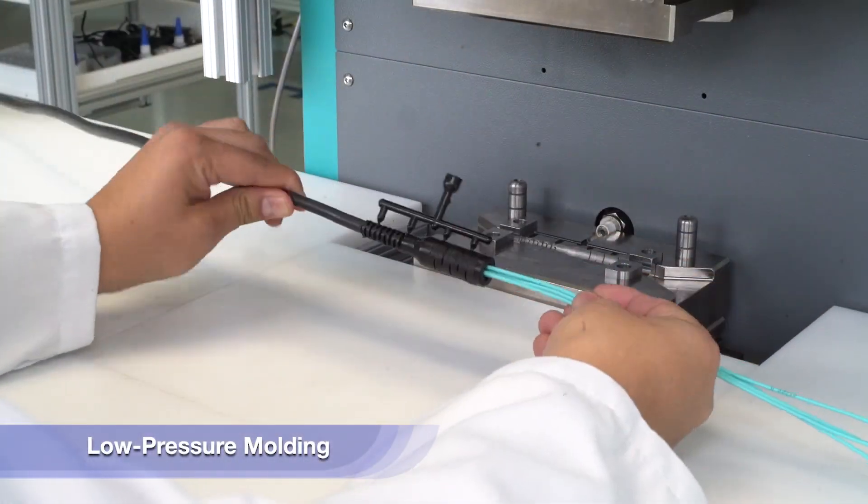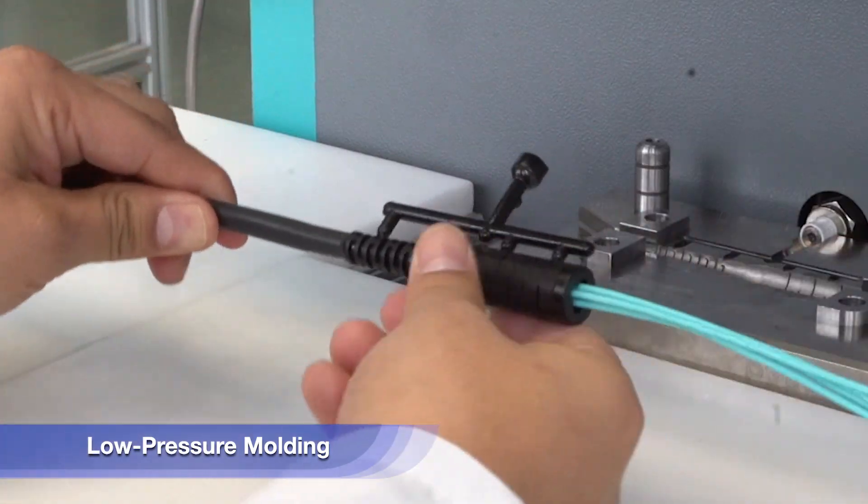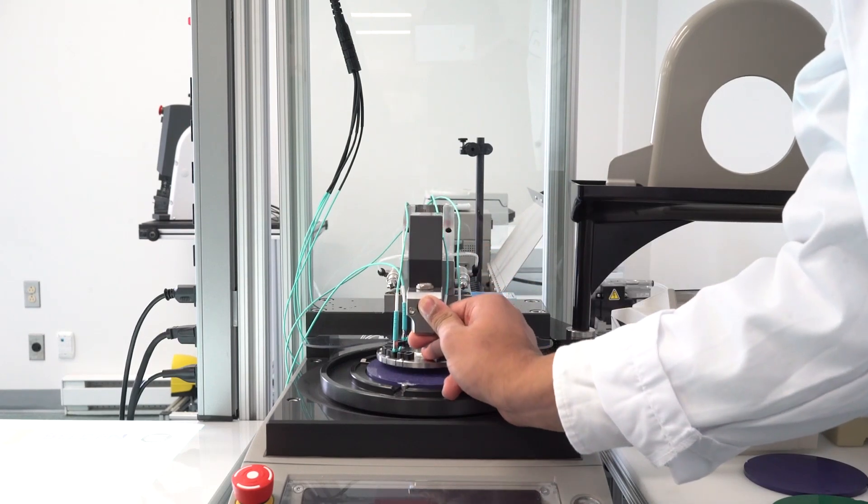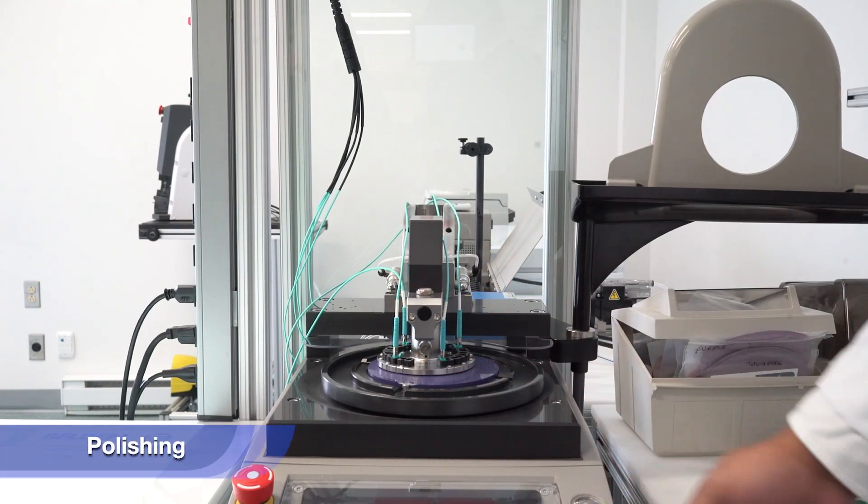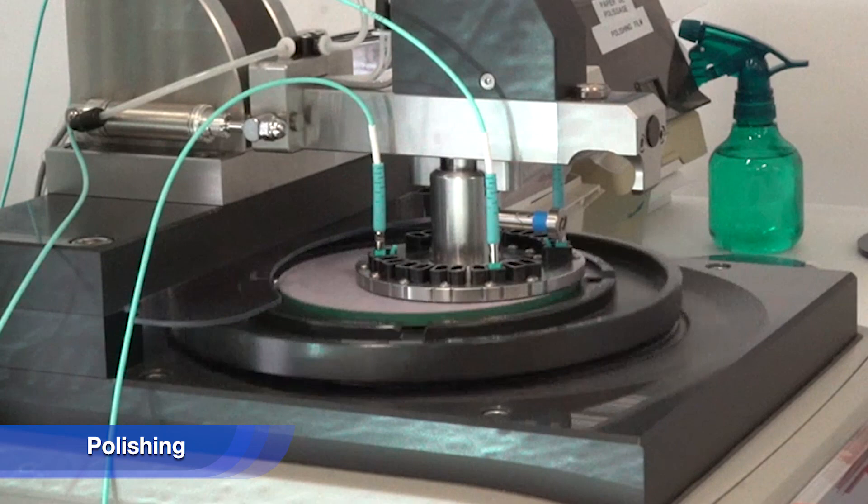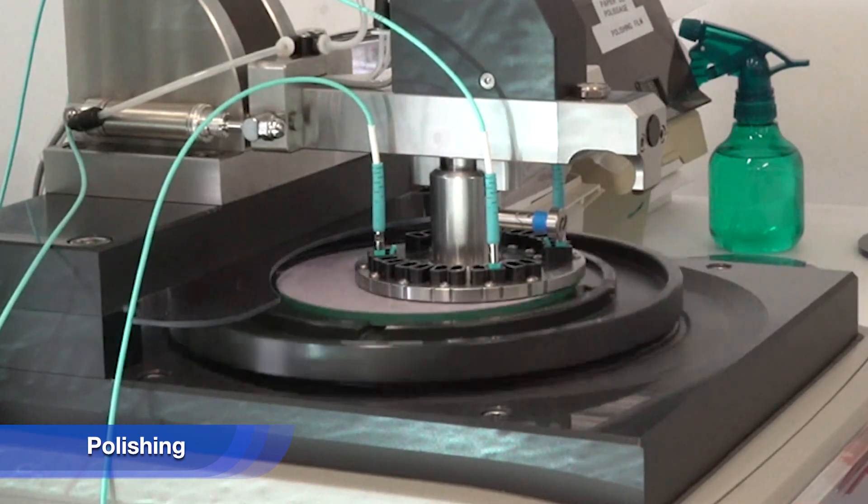We're going to work through things like low-pressure molding to be able to create unique shapes for attachments and be able to hold the assemblies in place. We're going to work through the polishing process for all the legacy types of connectors and even some of the more bleeding edge connectors that have yet to fully hit the market.